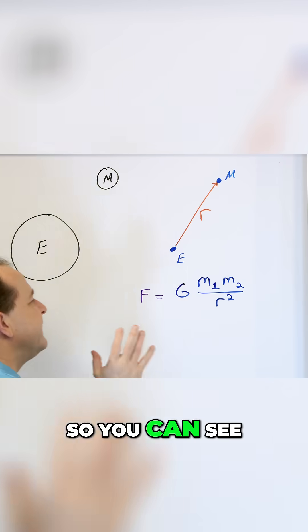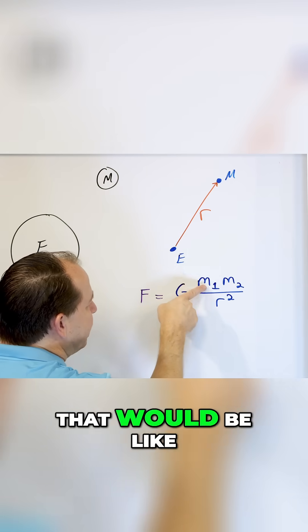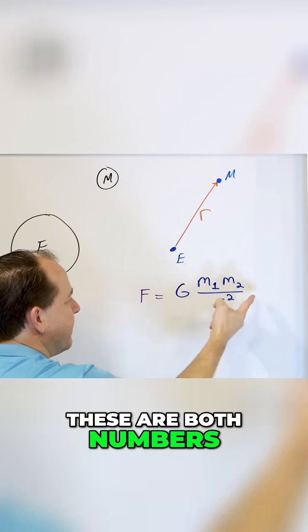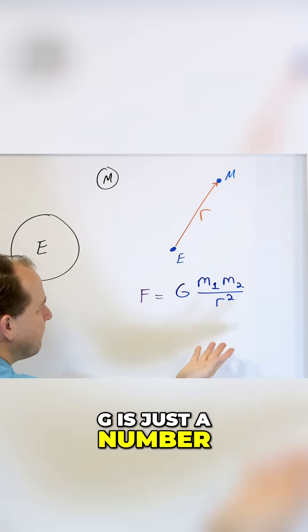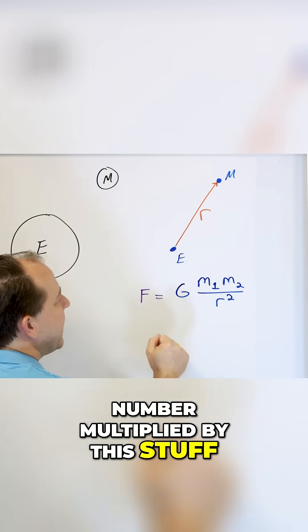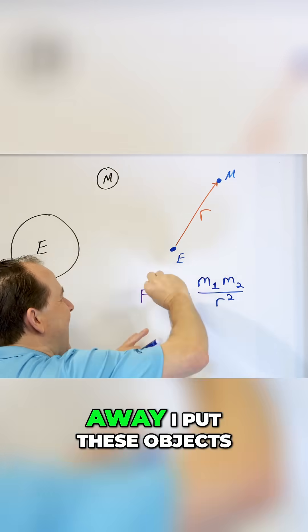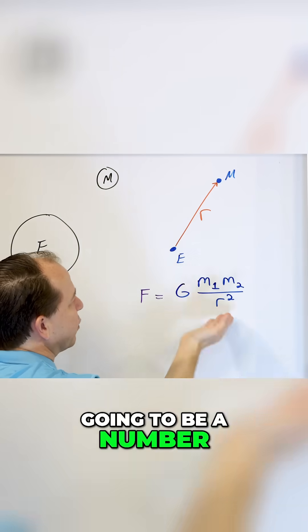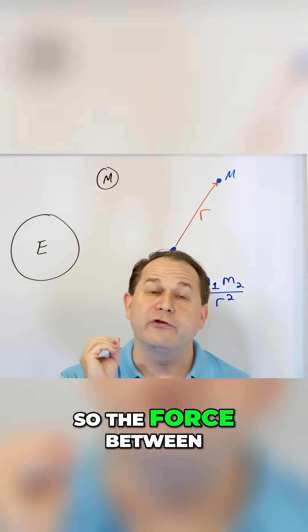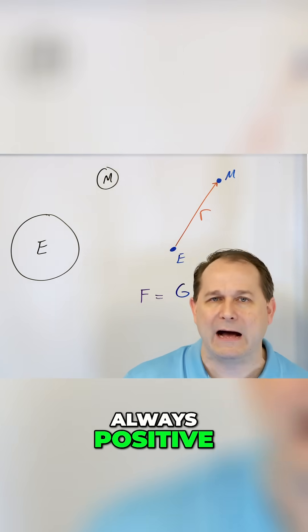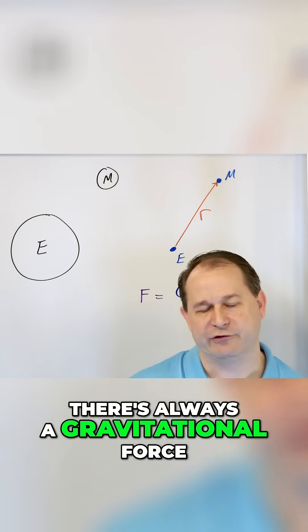So you can see that if the Earth has mass, that would be like M₁, and if the Moon or a spacecraft has mass, these are both numbers. G is just a number. I could tell you what the number is, but it's just a number multiplied by this stuff. Then, no matter how far away I put these objects, this radius or this distance is still going to be a number. We're dividing by it. So the force between any two bodies in the solar system is always positive. There's always a gravitational force.